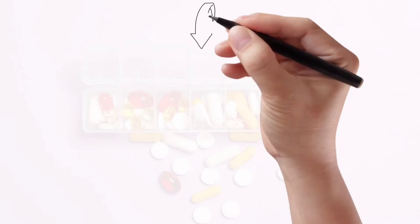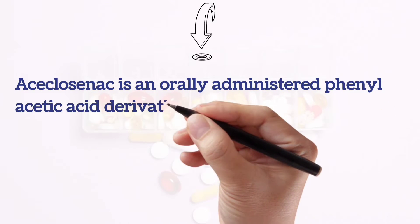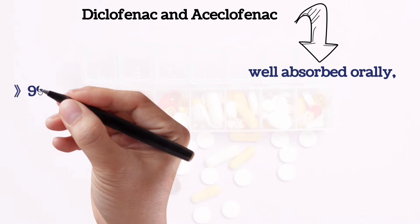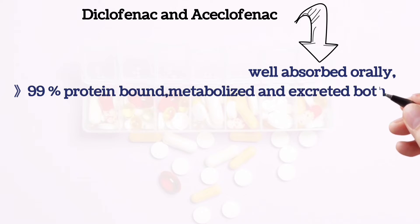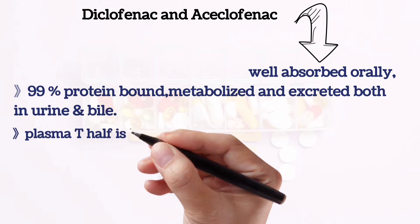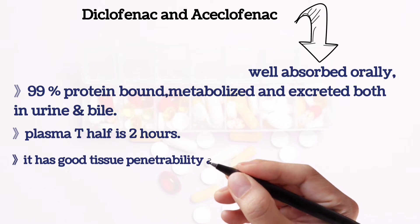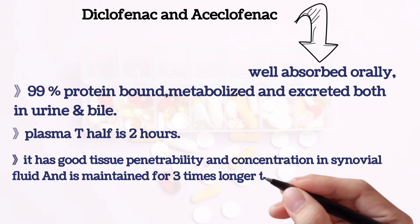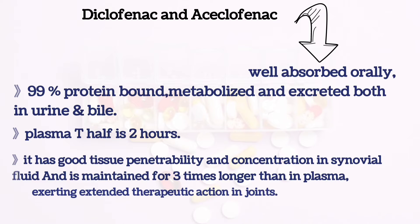Aceclofenac is an orally administered phenylacetic acid derivative with effects on a variety of inflammatory mediators. It is well-absorbed orally, 99% protein-bound, and metabolized and excreted both in urine and bile. Its plasma half-life is 2 hours. It has good tissue penetrability, and concentration in synovial fluid is maintained for 3 times longer than in plasma, exerting extended therapeutic action in joints.